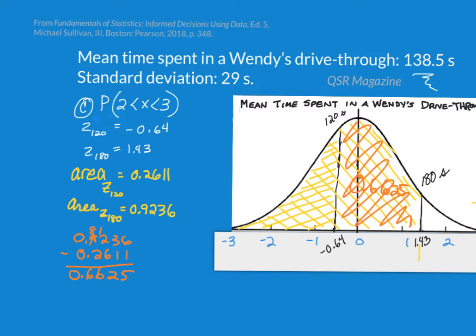So the proportion of cars that spend between two and three minutes in the Wendy's drive-thru is 66.25%. And as an added bonus, if you want to interpret that proportion, you could say that out of 100 cars, about 66 of them will wait or spend two to three minutes in the Wendy's drive-thru.